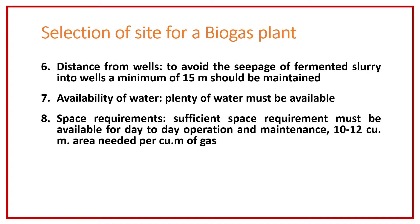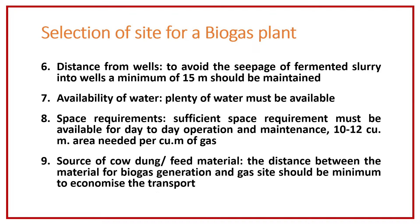Then space requirement should be considered — there should be enough space for daily operations and maintenance, such as mixing up the slurry, adding the slurry, and taking out the digested slurry from the other side. The recommended value is almost 10 to 12 cubic meters of area needed per cubic meter of gas production. Also, the source of cow dung or feed material should be nearby to minimize transportation cost.